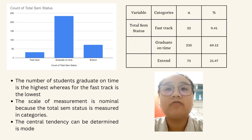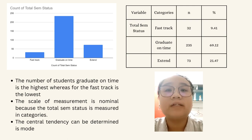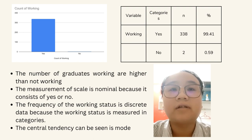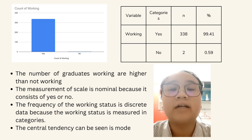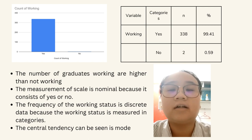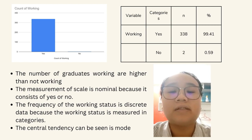Continuing with the frequency of total semester status, the number of students who graduate on time is the highest, whereas fast track is the lowest. The scale of measurement is nominal because total semester status is measured in categories, and the central tendency is mode. Next is the frequency of working status. Based on the graph and table, the number of graduates who are working is higher than non-working — 99.41% working, while only 0.59% are non-working. The two non-working graduates are still students. The scale of measurement is nominal, and the data is discrete. The central tendency that can be seen is mode.